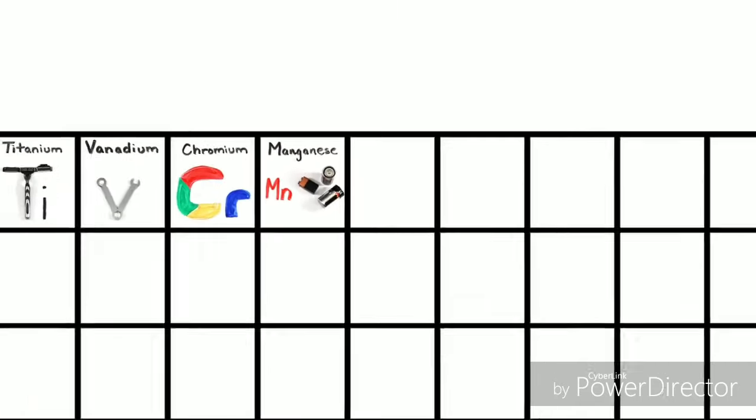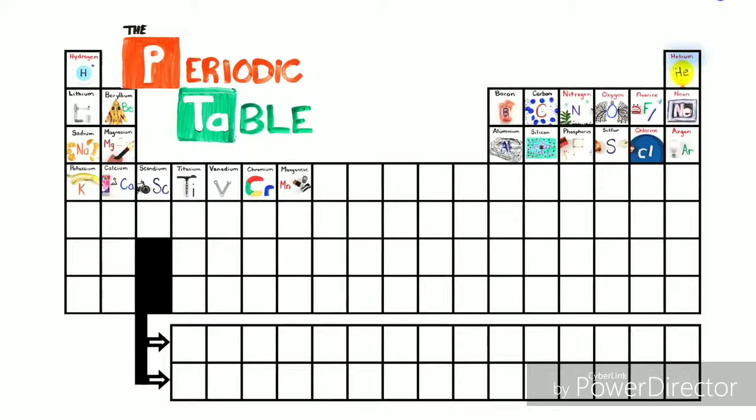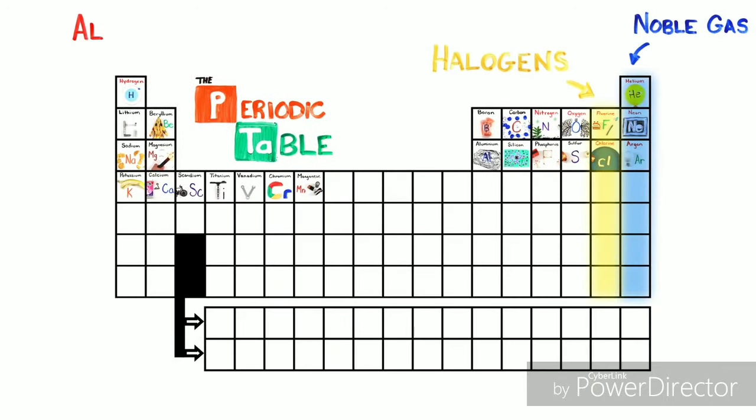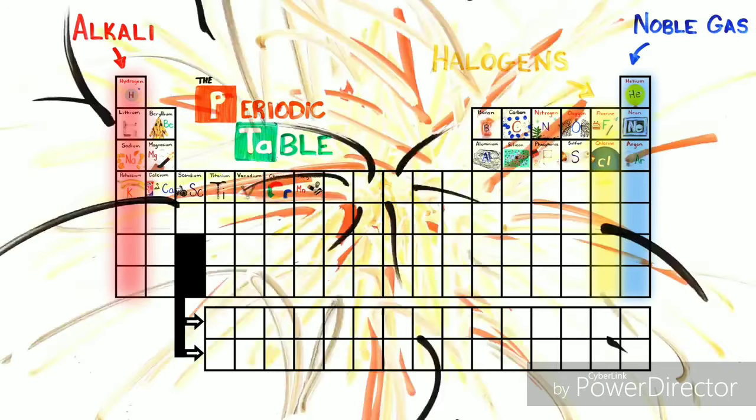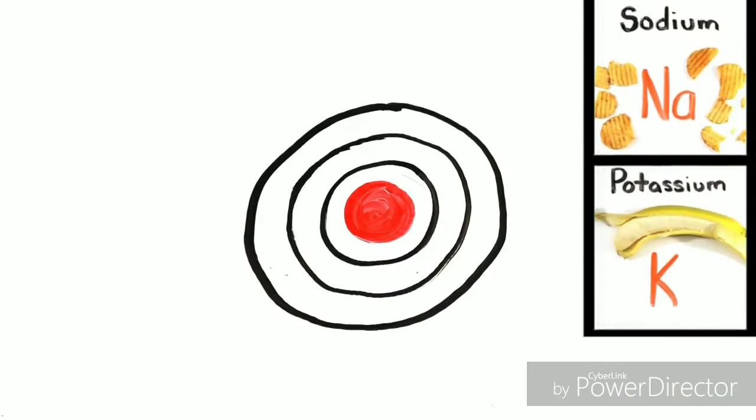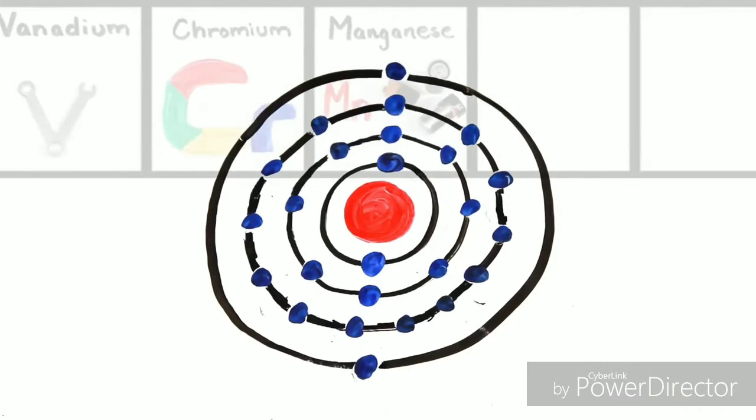This is the Periodic Table, Noble Gas is stable, halogens and alkali react aggressively. Each period we'll see new outer shells, while electrons are added, moving to the right.